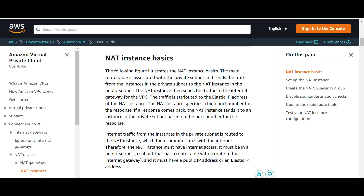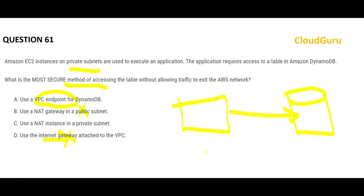Option C suggests using a NAT instance. A NAT instance is used when you are in a private network and want to send traffic out to the internet — it acts as a mediator for internet-bound traffic. In this question, both the EC2 instance and the DynamoDB instance are in private subnets and you don't need to go to the internet at all. Plus, the question explicitly states traffic must not exit the AWS network, so NAT instance is wrong. The VPC endpoint is the final answer.